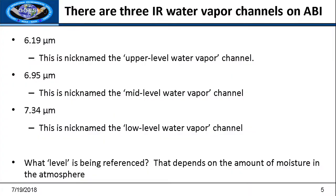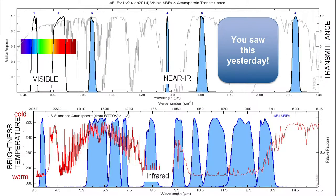These channels have been nicknamed: 6.19 is the upper-level water vapor, 6.95 is the mid-level water vapor, and — not very originally — 7.34 is the low-level water vapor. The question is what level is really being referenced, and it varies with moisture. Here again we have the three water vapor channels, with more water vapor absorption in the 6.19 channel, which is also a little bit broader, and progressively less absorption in the 6.95 and the 7.34.